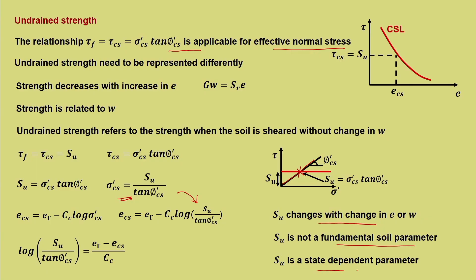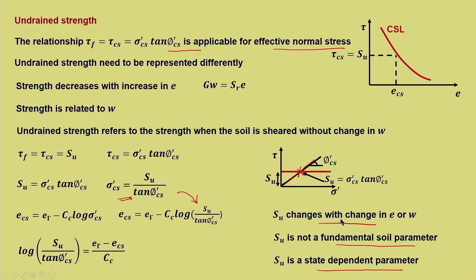S_U is a state-dependent parameter — what is the state of the soil for undrained shear strength is dependent on where the initial point is positioned with respect to the critical state line, defined by void ratio e or water content W. The initial void ratio gives where the soil is with respect to the final state on the critical state line. State is defined by void ratio in the critical state framework.